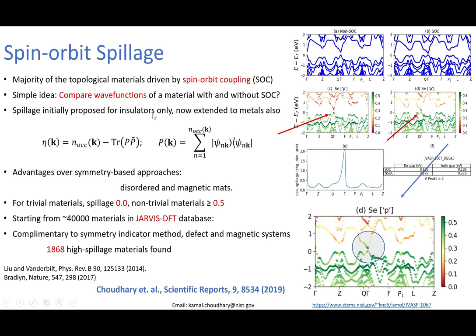The idea is actually very simple where we compare wave functions with and without spin-orbit coupling, and then we use the k-dependent occupied orbitals and calculate spillage based on this formulation η(k) = N_occ(k) - Tr(P†P'), where we have the wave function from both spin-orbit and non-spin-orbit calculations.